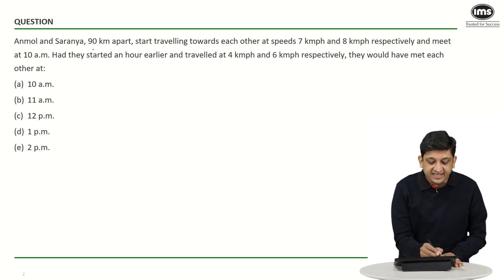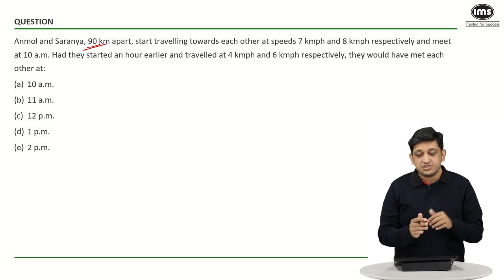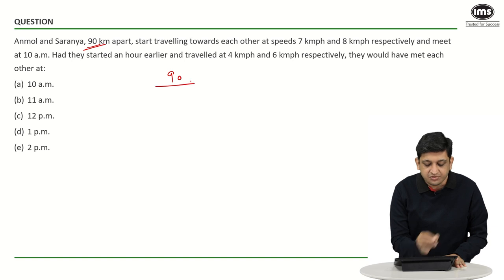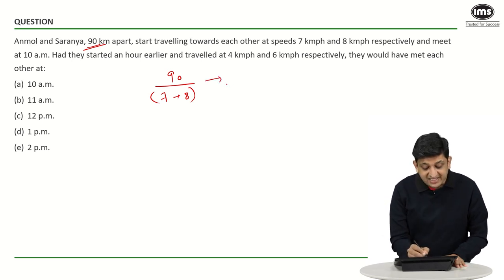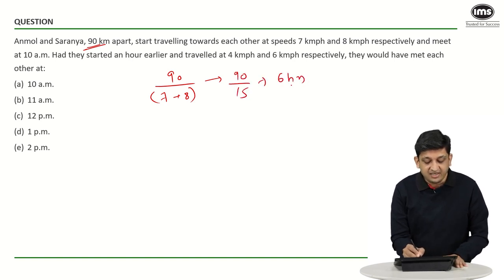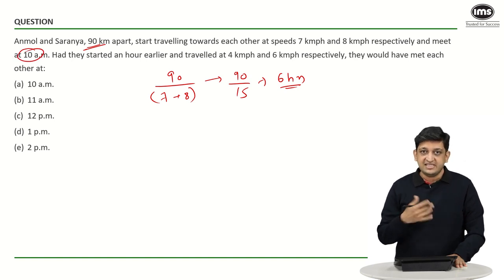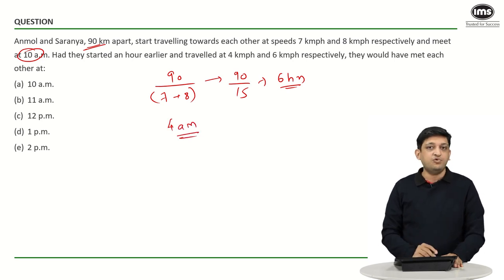In this case, 90 kilometers is the gap between Anmol and Saranya. Both of them are traveling in opposite directions, so their speeds will get added. What happens is 90 kilometers is going to be covered at a relative speed of 7 plus 8 kilometers per hour, or 15 kilometers per hour. So in the first case, the amount of time required to cover this distance is 90 divided by 15, that is 6 hours. After traveling for 6 hours, they meet each other at 10 a.m., which means they should have started simultaneously at 4 a.m.